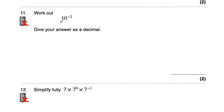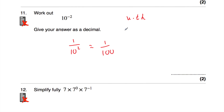Question 12: work out 10 to the power of negative 2 and give the answer as a decimal. 10 squared is 100, so 10 to the power of negative 2 equals 1 over 100. To convert to a decimal: 1 over 100 is one hundredth, which is 0.01. You can also think of it as dividing 1 by 10 twice: 1 ÷ 10 = 0.1, then ÷ 10 again = 0.01.